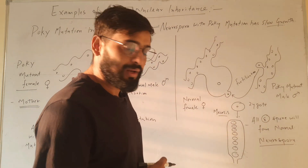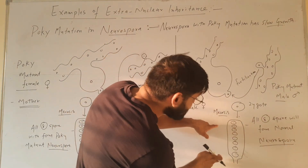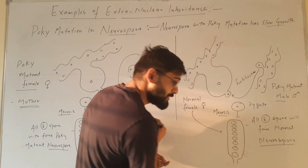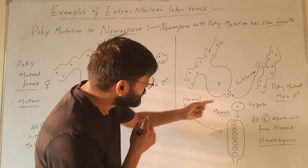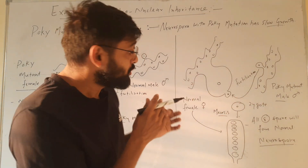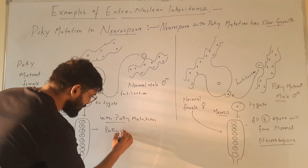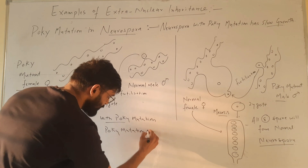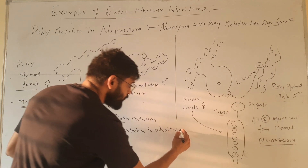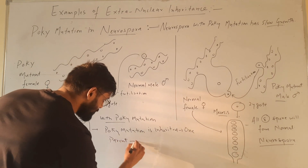Here you can see that the female is normal but the male was mutant. In this case we can conclude that these spores inherited the gene from the normal female, not from the poky male. So, poky mutation is inherited from one parent, and that parent is the mother.